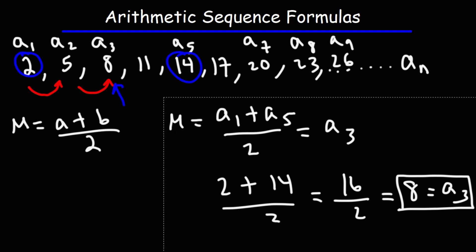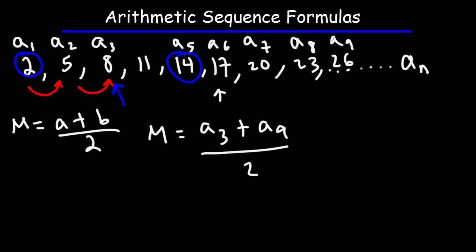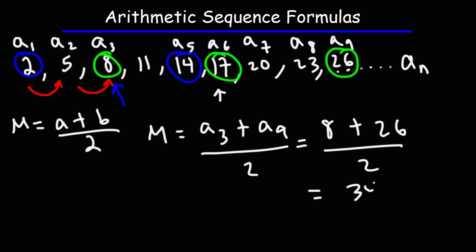Let's find the arithmetic mean of the third and ninth terms. The middle term between the third and ninth is the sixth term. The average of 3 and 9 is 6. The third term is 8 and the ninth term is 26, so (8 plus 26) divided by 2 is 34 divided by 2, which equals 17. That's the value of the sixth term.